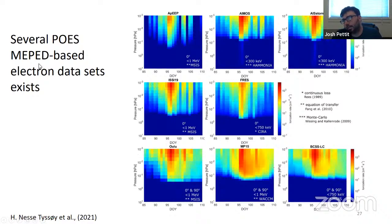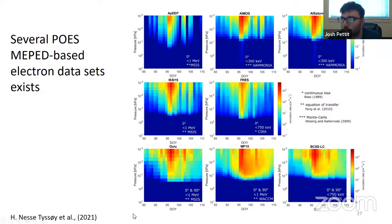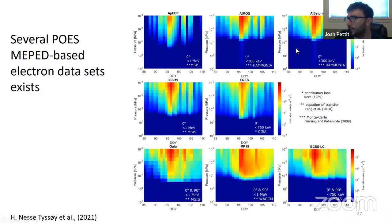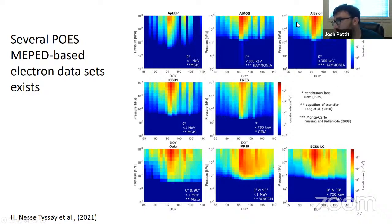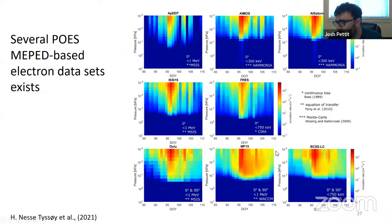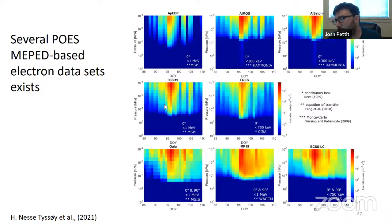This is not the only game in town — there's several different MEPED-based electron datasets that exist. This was a paper I was part of, published last year, where we compared eight different POES-based MEPED datasets. The top five use only the zero-degree detector, and these are ionization rates — a proxy for electron flux. You can see that these five on the top have less ionization than the three on the bottom that all use the zero and 90-degree detectors. Nonetheless there's a big difference between them. I just wanted to highlight that there are more than just my dataset that exist.